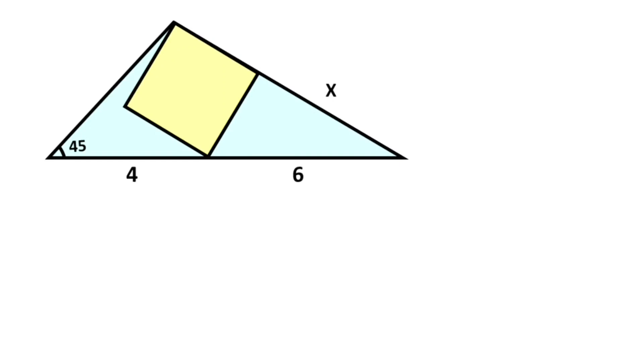Hello everyone, in this video we have one square and one triangle. Here this length is 4, this length is 6, and this angle is 45 degrees. We need to find x. First of all, let's call here y unit. You know that the square has four same sides, so these must be equal to y.